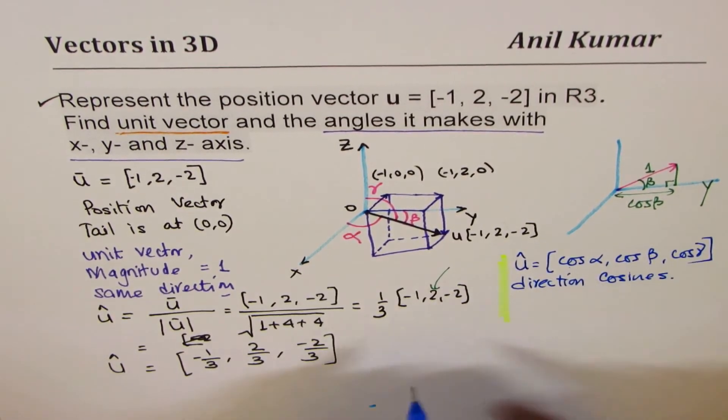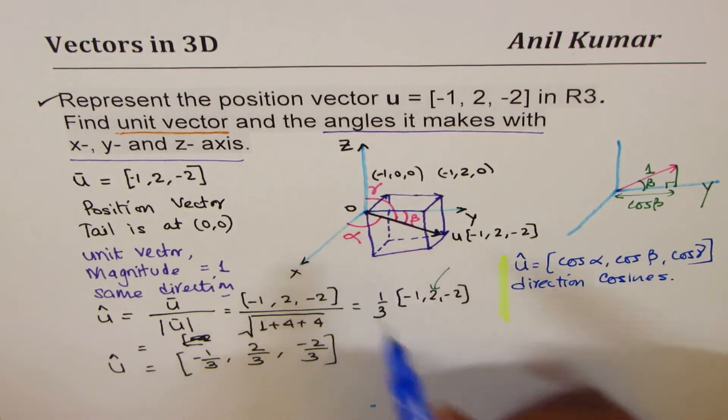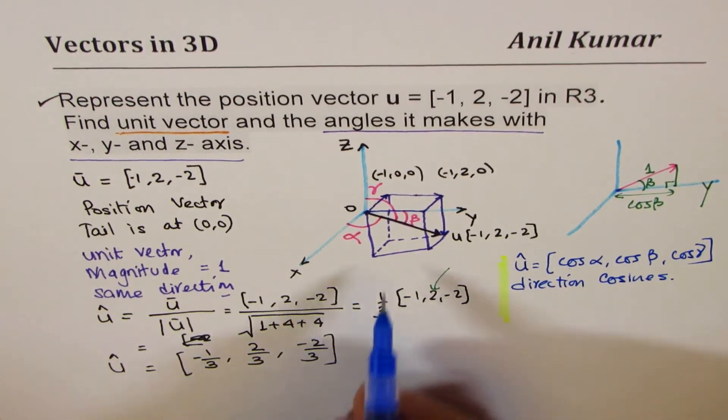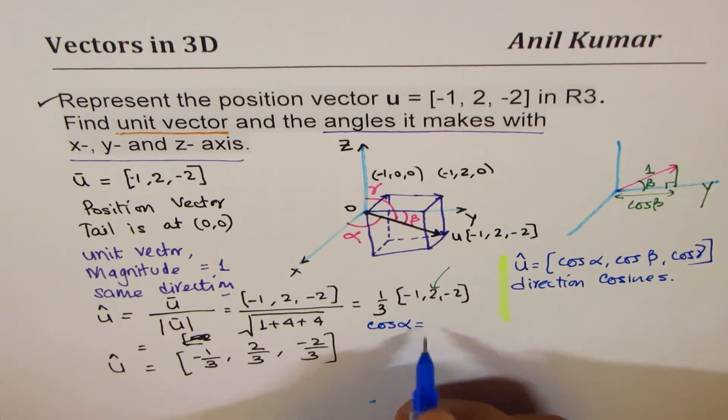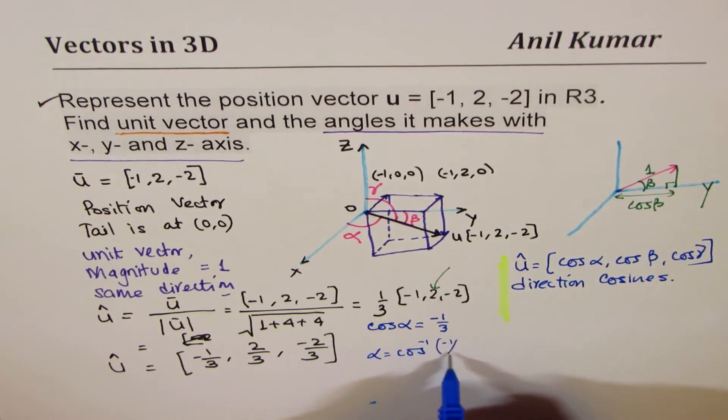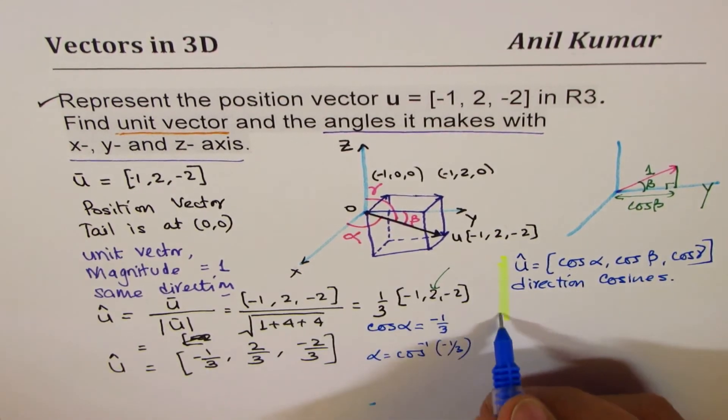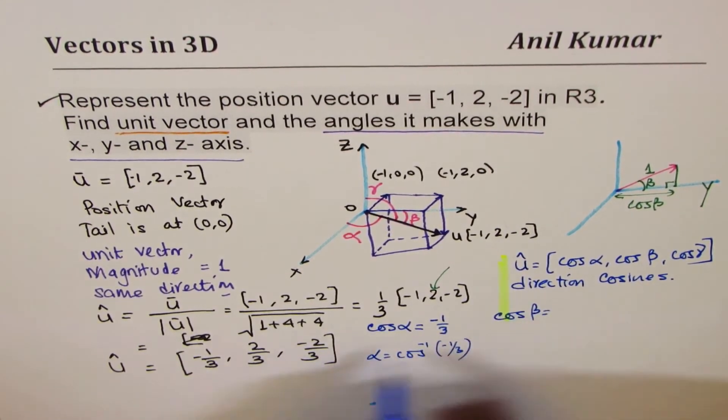Remember that. So, that's the relation of finding the angle. So, to find alpha, we can say, cos α is equal to -1/3, and therefore, α is cos inverse of -1/3.